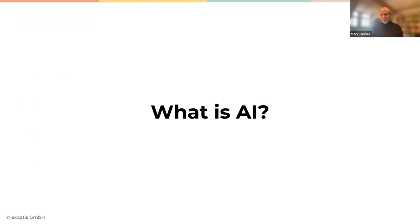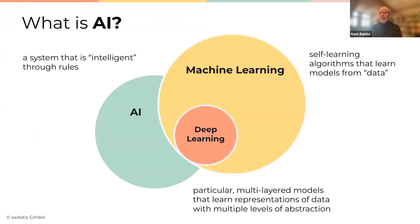We founded the company Ekstatis together, André and I, about a year ago. We're a young company and we specialize in building applications based on AI — specifically in search, in understanding text, and in recognizing images. The technology we're going to show you today is actually what we use in our own applications. So let's start with the question: what is AI, or what do people usually mean when they talk about AI?